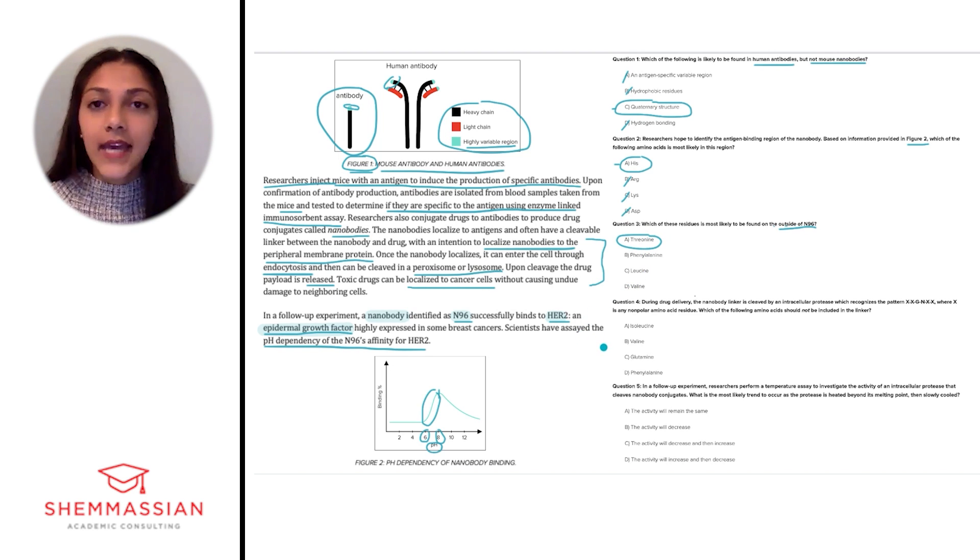And then question 4 says, during drug delivery, the nanobody linker is cleaved by an intracellular protease, which recognizes this particular pattern, where X is any non-polar amino acid residue. Which of the following amino acids should not be included in the linker?